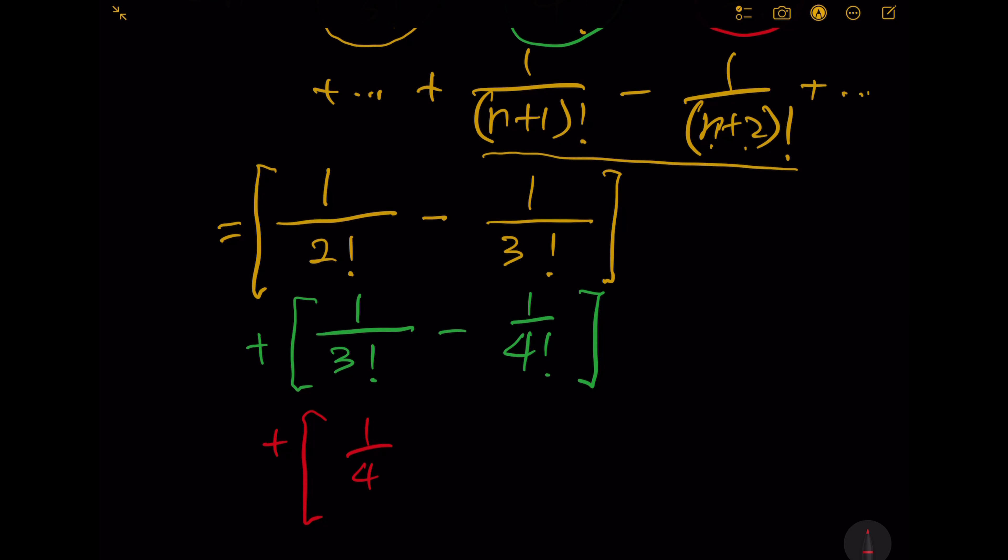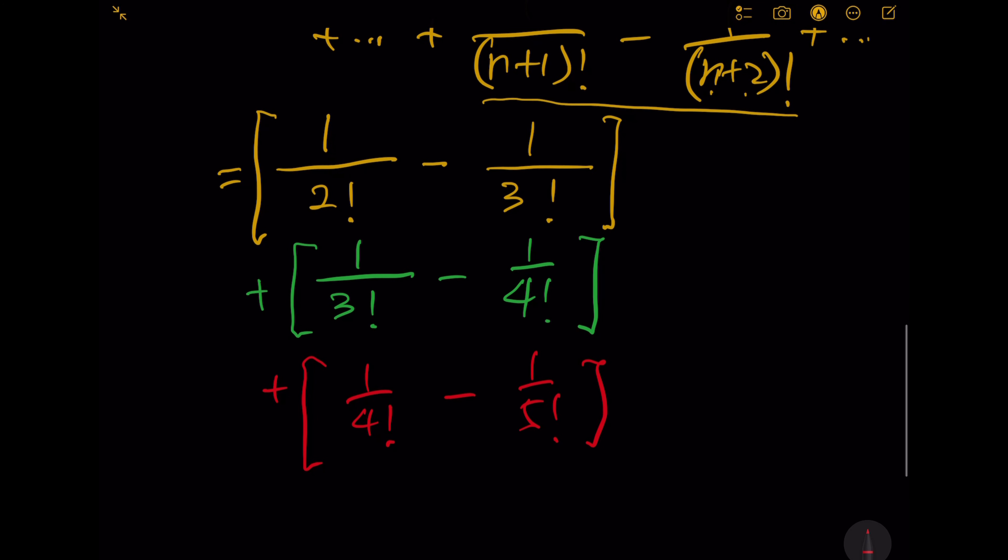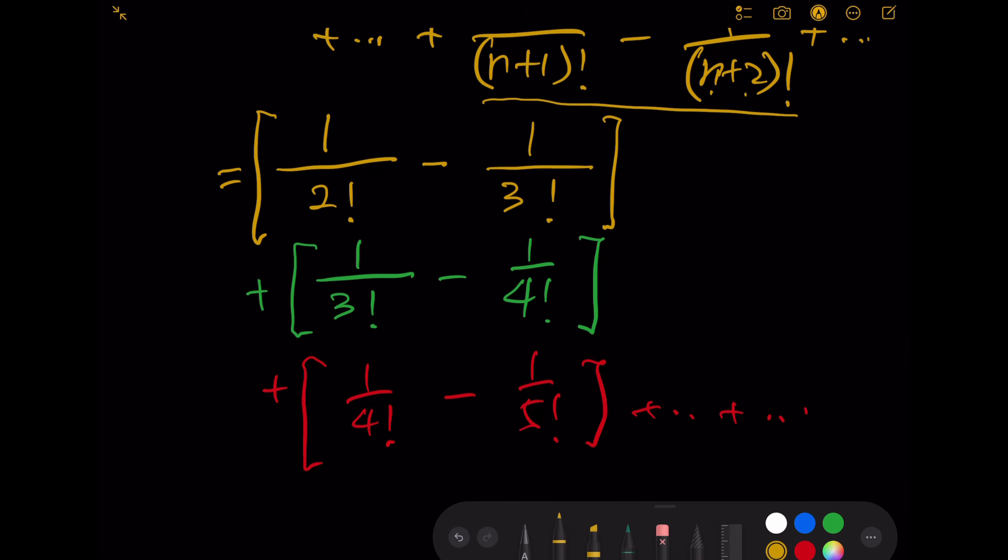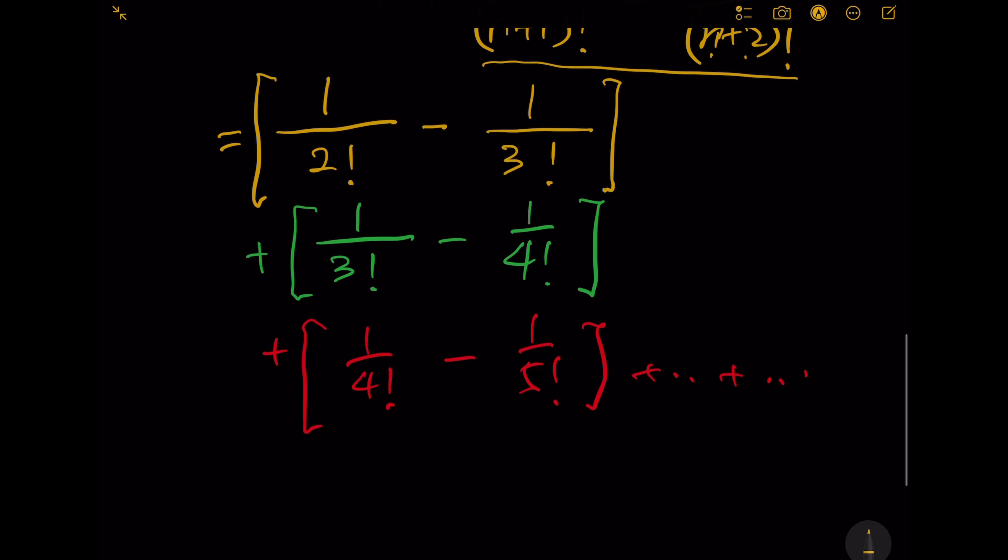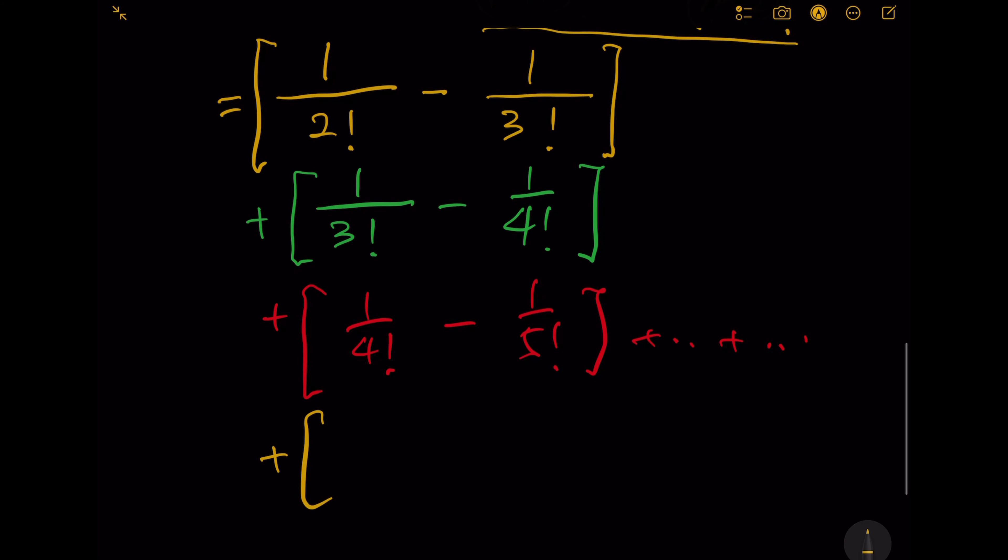And this is repeating until the last term, which is plus 1 over n plus 1 factorial minus 1 over n plus 2 factorial.